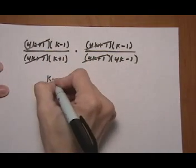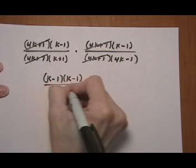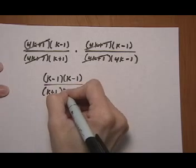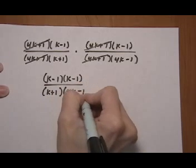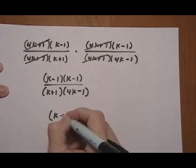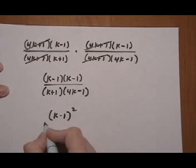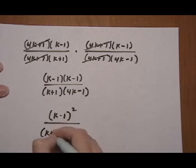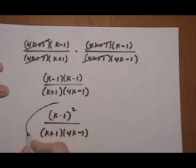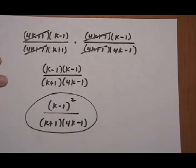So that leaves us with k minus 1, k minus 1, all over k plus 1, 4k minus 1. So you can either leave it like that, or a more common way to write the final answer is k minus 1 is happening twice, so it's squared over k plus 1, 4k minus 1. And that would be the final answer there.